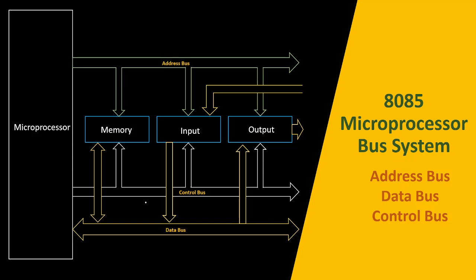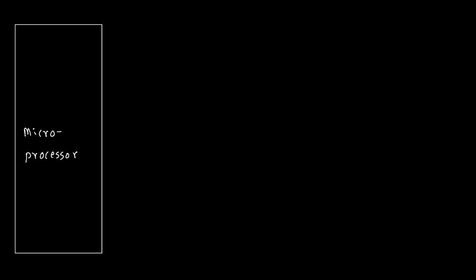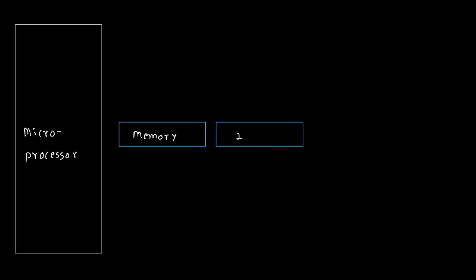Today we are going to learn the bus system of the 8085 microprocessor — the various buses involved. The bus system is made up of the following blocks: the microprocessor, which is connected externally with memory, input devices, and output devices. These are the three additional blocks that we are going to interface with our microprocessor.